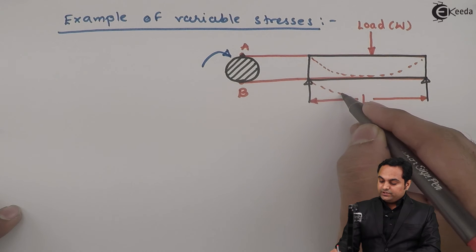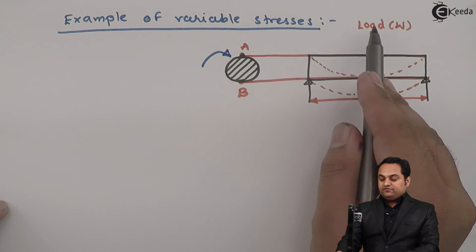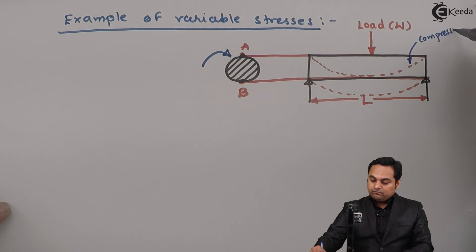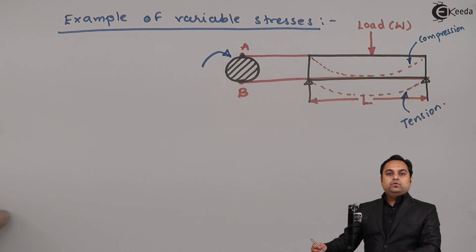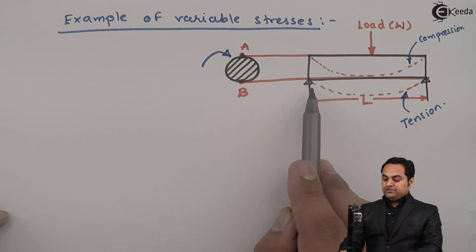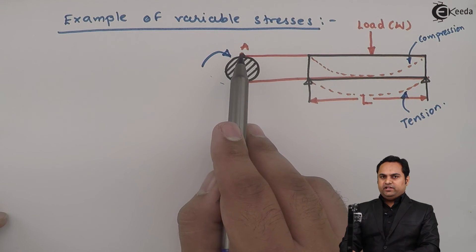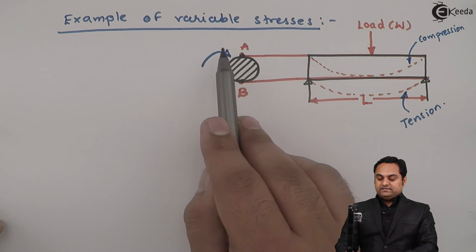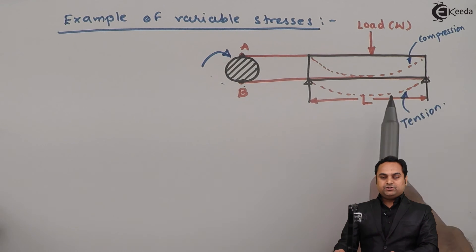When the shaft bends, point A is at the top, so at the top there is compression and at the bottom there is tension. So when point A is at the top it is subjected to compression, and point B is subjected to tension. When the shaft rotates and point B occupies the position of A, then B will be subjected to compression and A will be subjected to tension. In the next cycle, when point A reaches the top again, it will be subjected to compression and B will be subjected to tension.